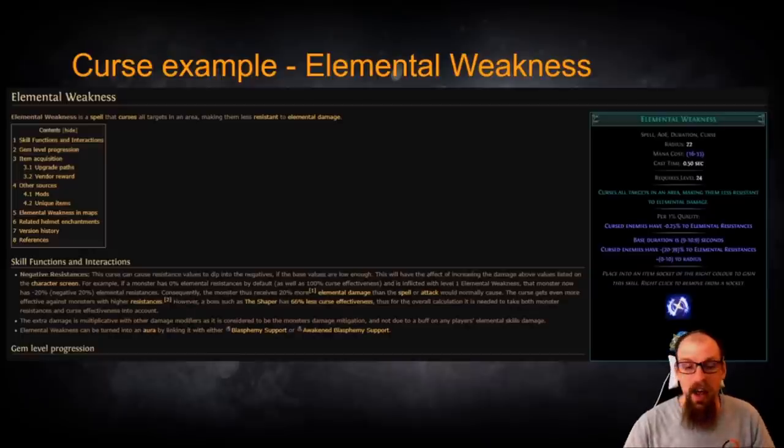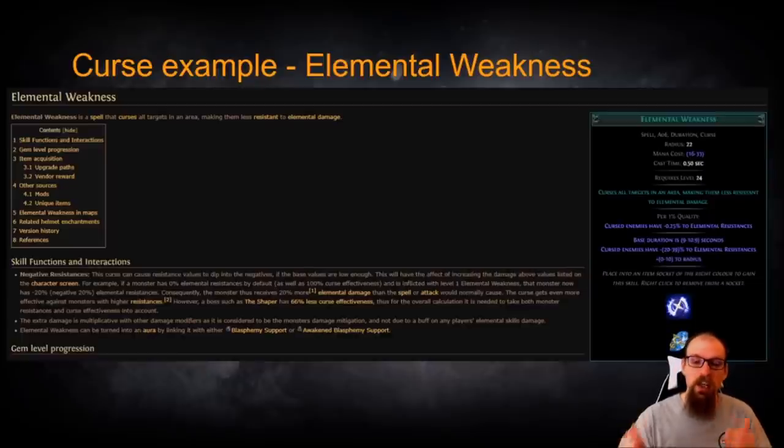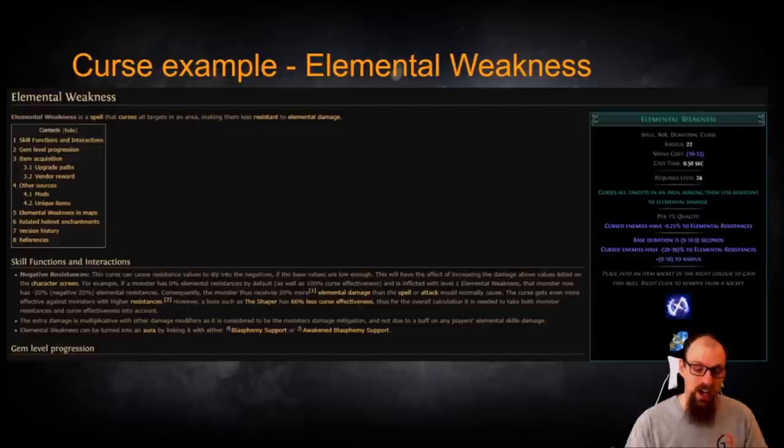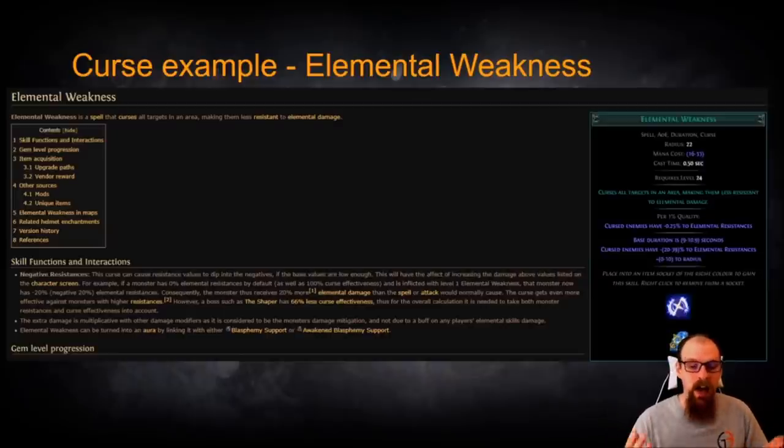A lot of builds want to take advantage of Elemental Damage and so of course, Generic Elemental Weakness is going to be helpful in this regard. Elemental Weakness gives Cursed Enemies have minus 0.25% to Elemental Resistances per 1% quality on the gem along with Cursed Enemies have minus 20% all the way up to 39% to Elemental Resistances. Now, you can either self-cast this or of course, you can use it via Blasphemy Support to cast it as an aura depending on how you'd like to use this particular curse as is true for all curse gems. Some of you may be aware of the way how resistances work and why negative resistances are important. Some of you might not be. So here's a quick recap or summary from the wiki.